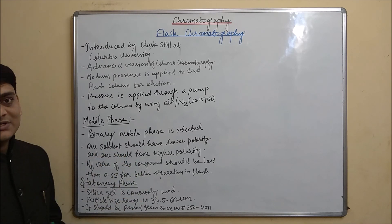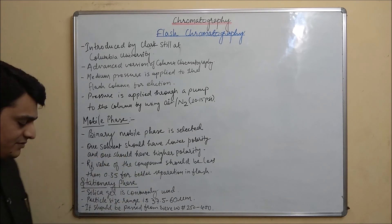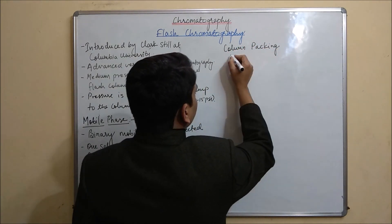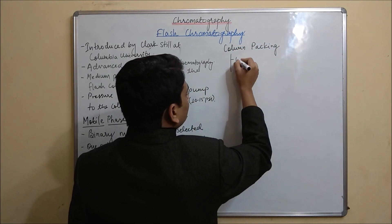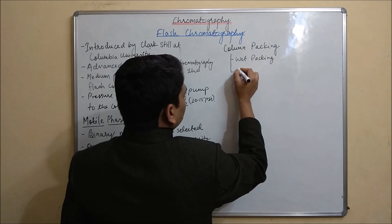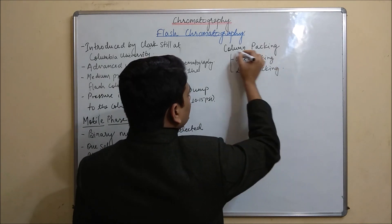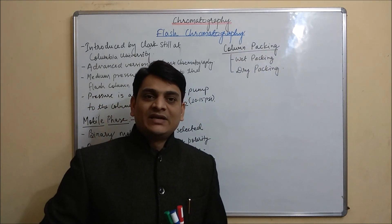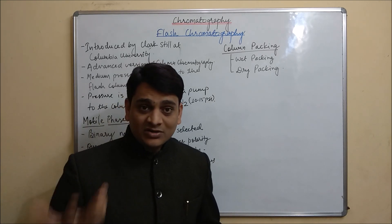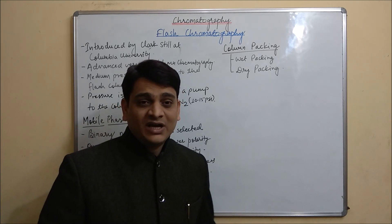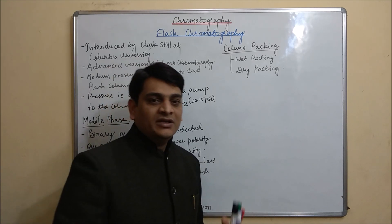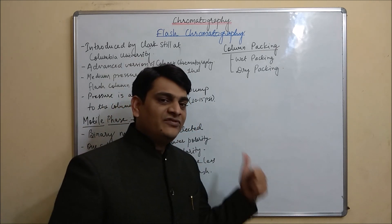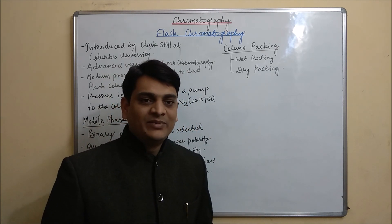Coming to the next part, which is column packing. The process of column packing is the same as in normal column chromatography or gravity column chromatography. There are two methods available for column packing: the first one is the wet method and the second one is the dry method.